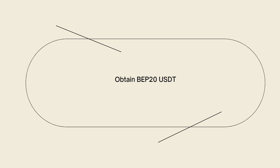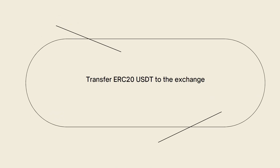Now transfer your ERC20 USDT to the exchange. If you have ERC20 USDT in your Trust Wallet, you will need to transfer it to the exchange that supports the conversion to BEP20. Open Trust Wallet, navigate to your USDT (ERC20) wallet, and select the send or transfer option. Enter the recipient address provided by the exchange and confirm the transaction.